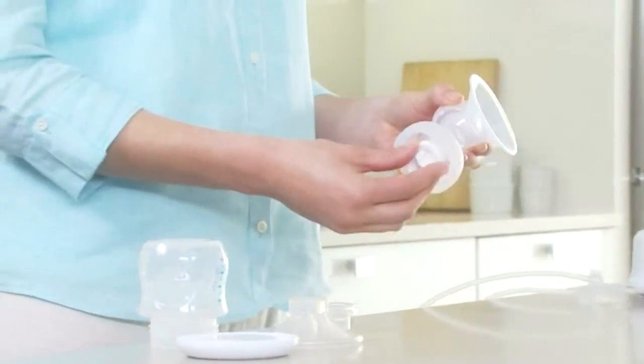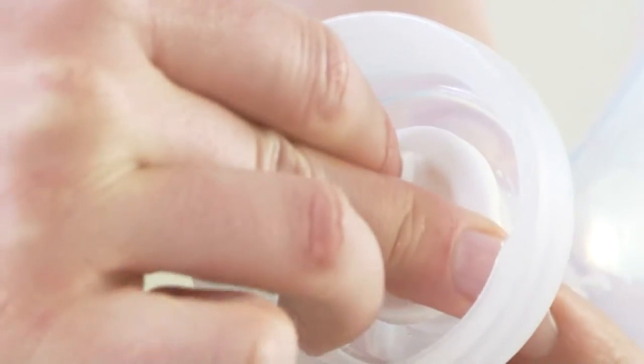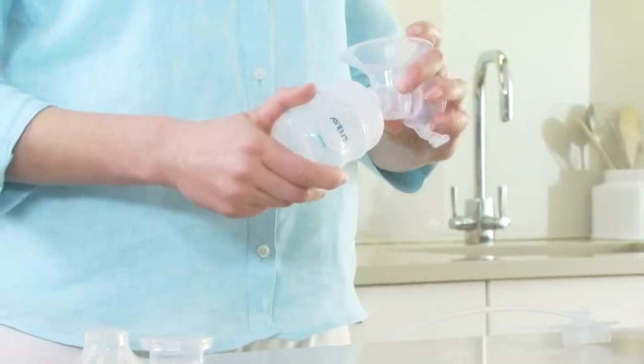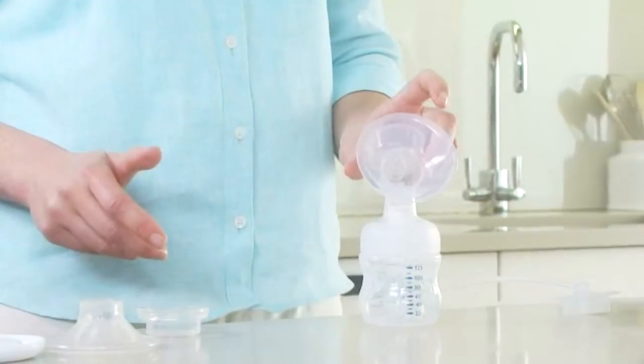Insert the white valve into the pump body from underneath and push it in as far as possible. Screw the pump body onto the Philips Avent natural bottle until it is securely fixed.